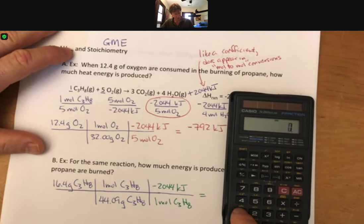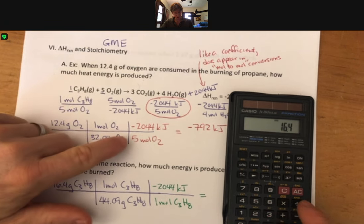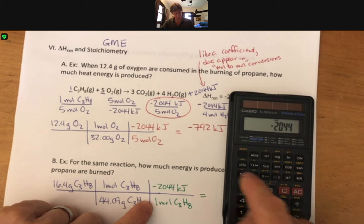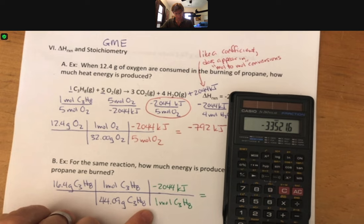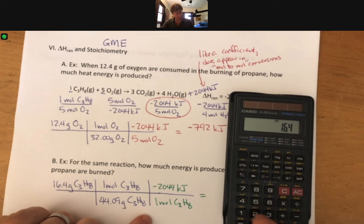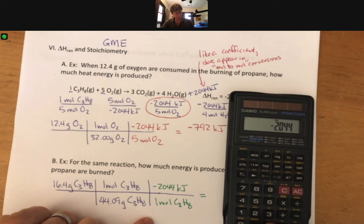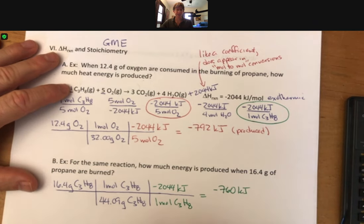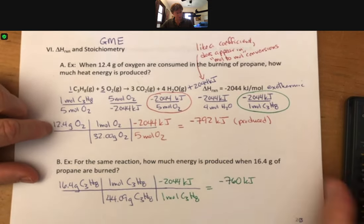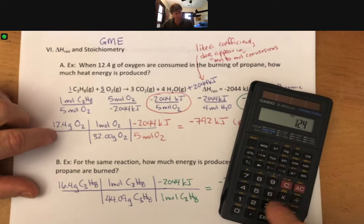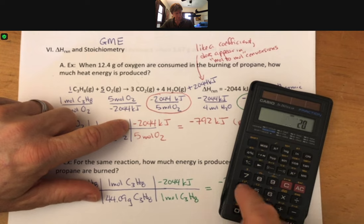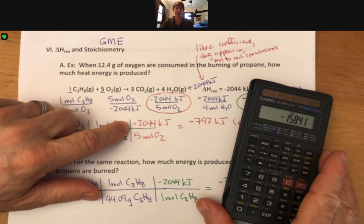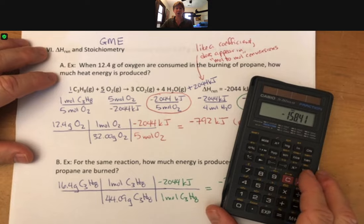This time we get 16.4 times 2044. Something went wrong there. 16.4 divided by 44.09, times 2044 minus. I get minus 760 kilojoules, and that is energy produced. Let me revisit this one. 12.4 divided by 32 times, I forgot to do that, 2044 divided by 5. Please change that number on your page. I apologize for getting the wrong answer. Make sure you update that number to minus 158 for this problem.